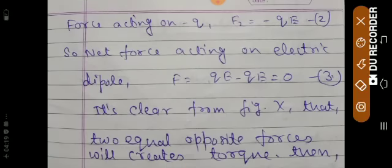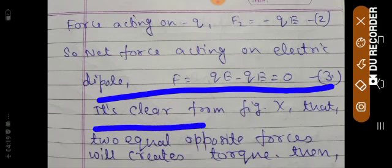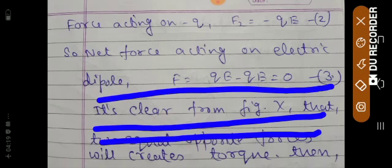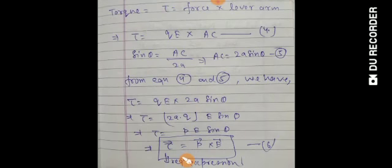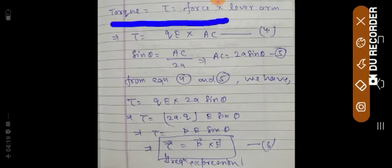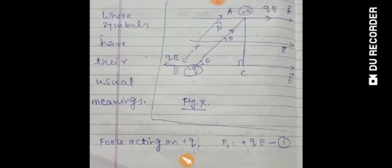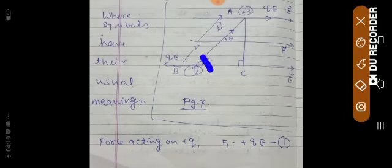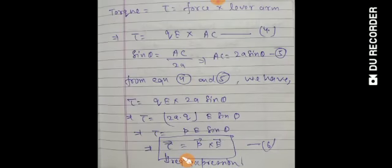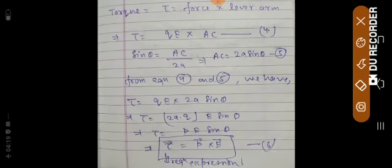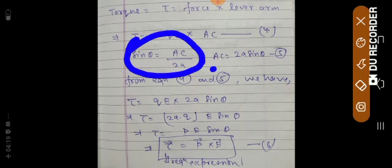Torque τ = force × lever arm = qE × AC. From the figure, using trigonometry: sin θ = AC / 2a, so AC = 2a sin θ. This is the lever arm expression.